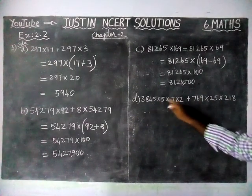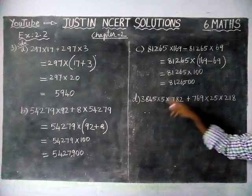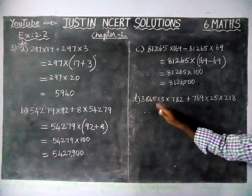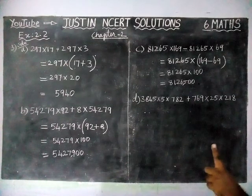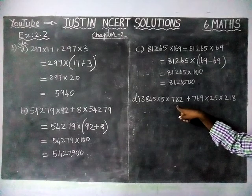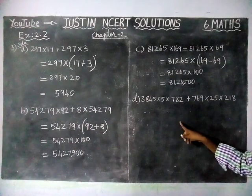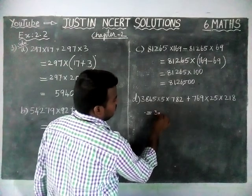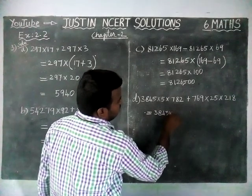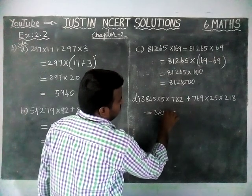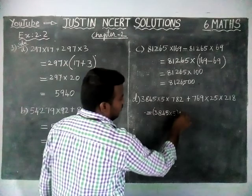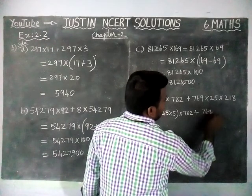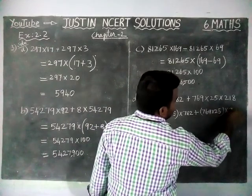Next, option D. Here, they have given 3 numbers in the form A into B into C. They have also given a different number, so we have to interchange the places first and then find the answer. Here, we are going to use 2 properties: one is the associative property — A into B into C — and then the distributive property of multiplication over addition. First, we are going to use the associative property: 3845 into 5, and separately 769 into 25 into 218.